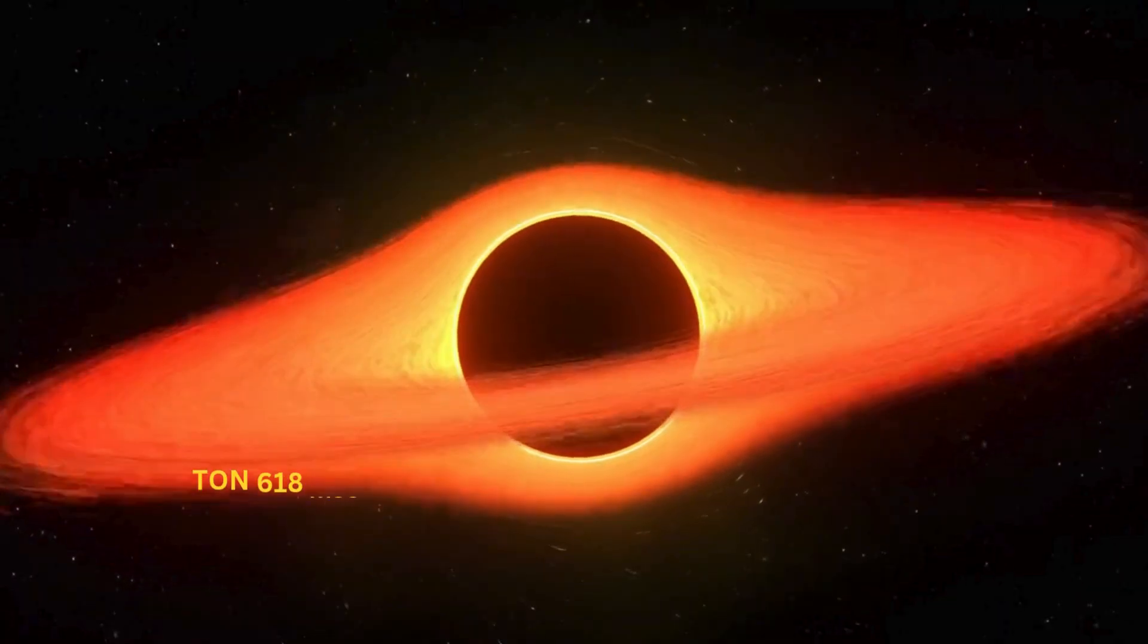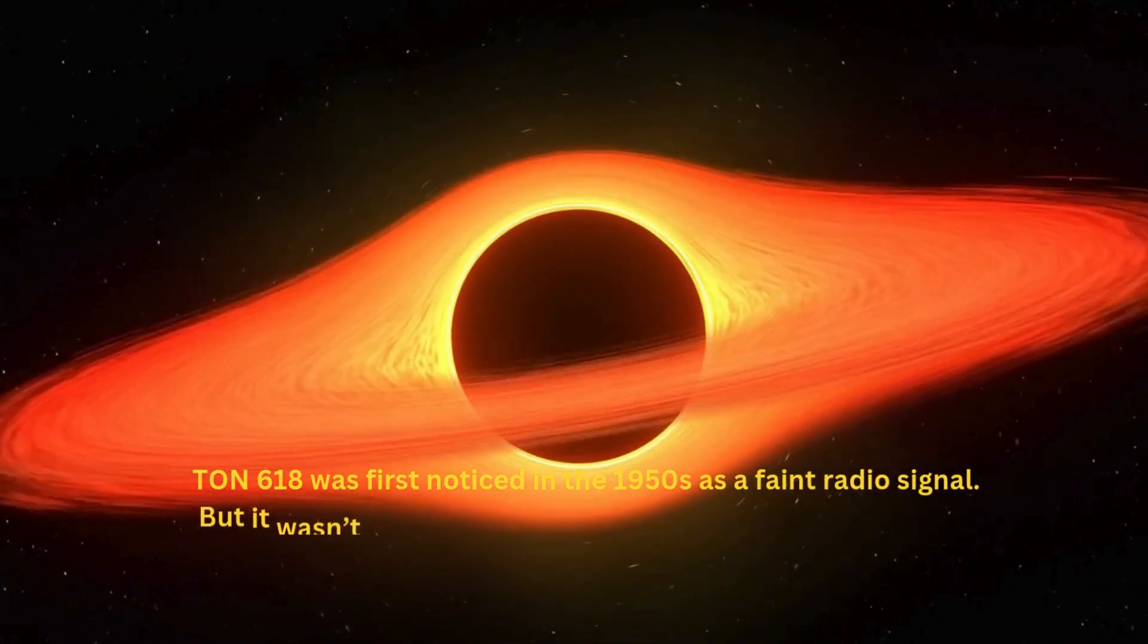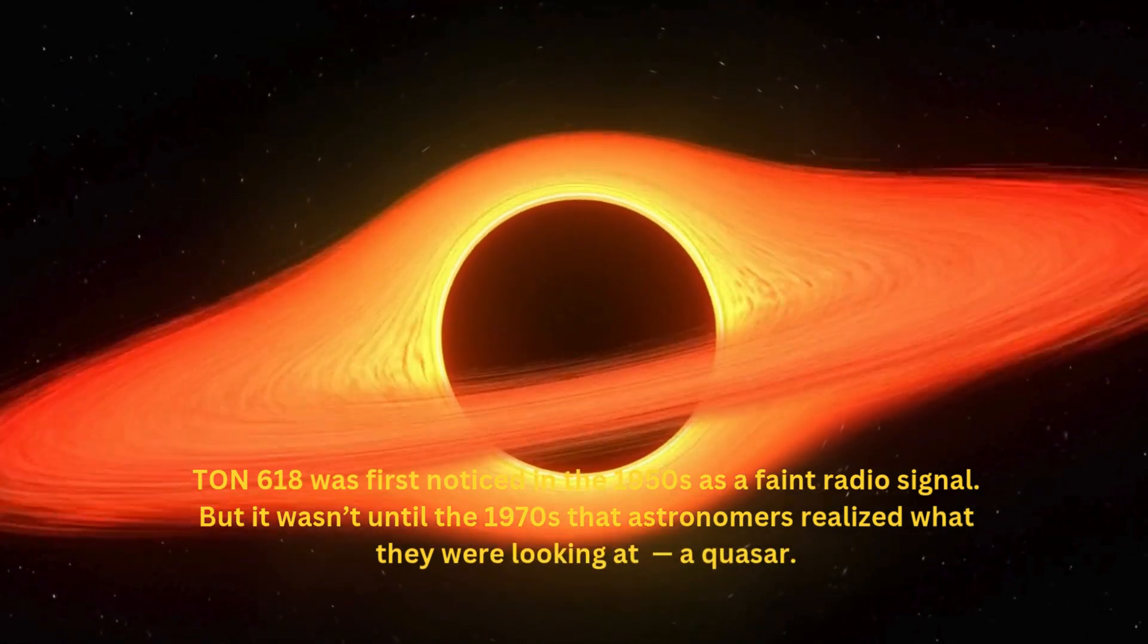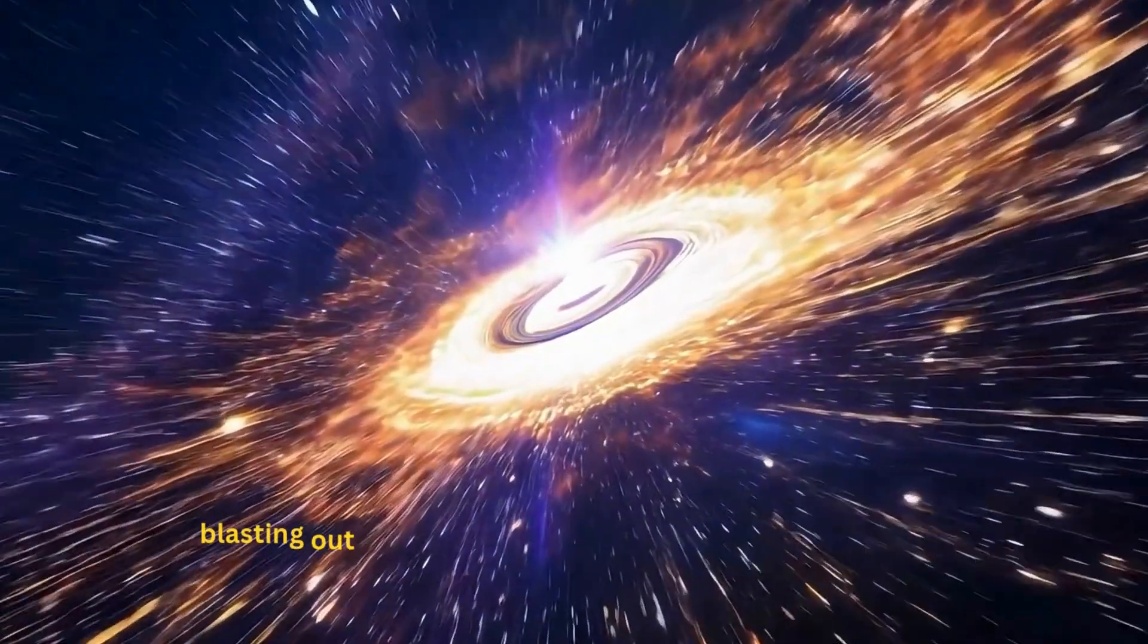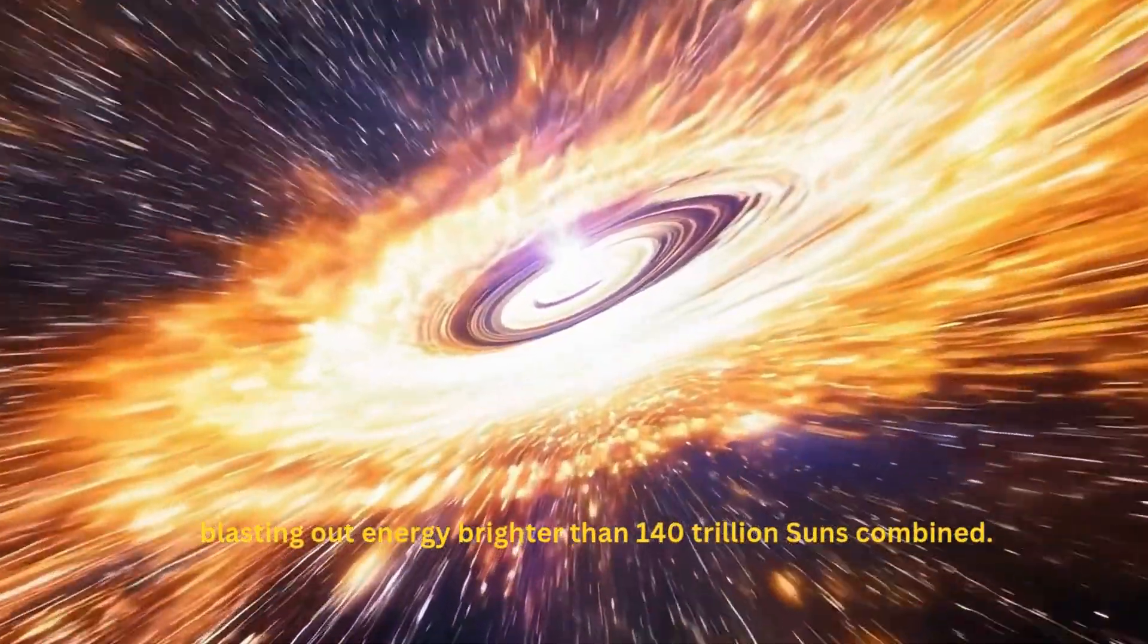TON 618 was first noticed in the 1950s as a faint radio signal, but it wasn't until the 1970s that astronomers realized what they were looking at. A quasar, blasting out energy brighter than 140 trillion suns combined.